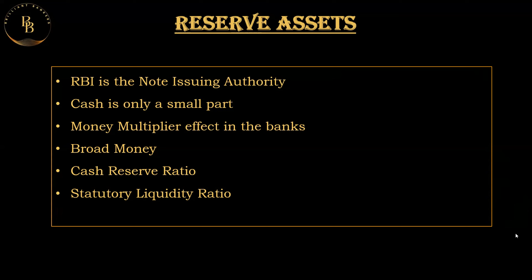The RBI aims to reduce the money multiplier effect, which causes inflation. As money multiplies, people have more for rotation — they purchase more, demand increases, and prices rise. To control this, the RBI has instructed banks to comply with certain requirements: the CRR (Cash Reserve Ratio) and the SLR (Statutory Liquidity Ratio), by depositing cash with the RBI and investing in government or approved securities.